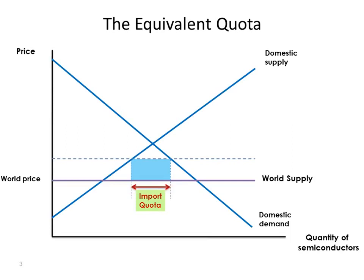We can think of the quota as subtracting this quantity from the domestic demand curve — shifting back the domestic demand curve, so that domestic suppliers will be able to choose how much to supply out of the domestic demand after the quota has been taken out.